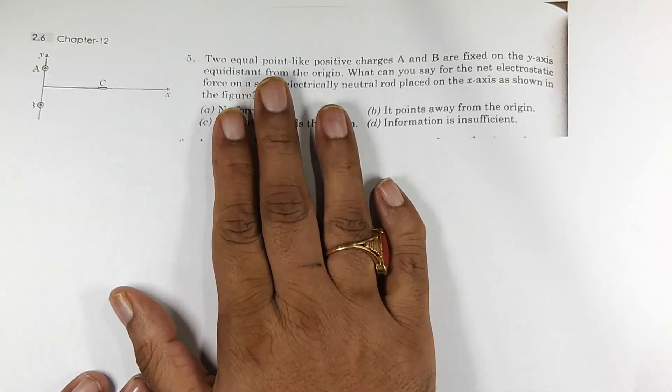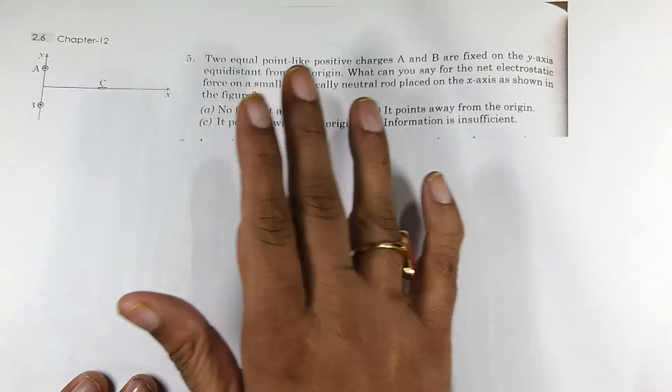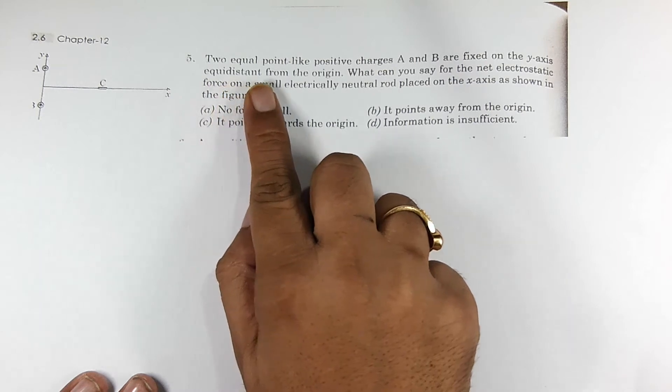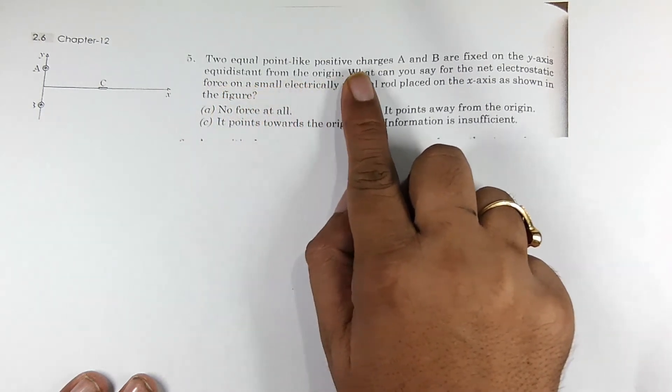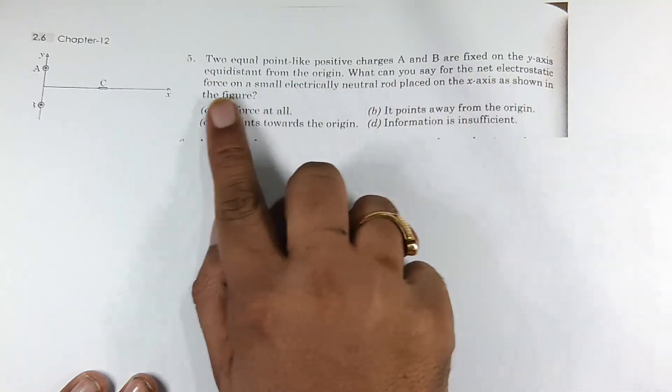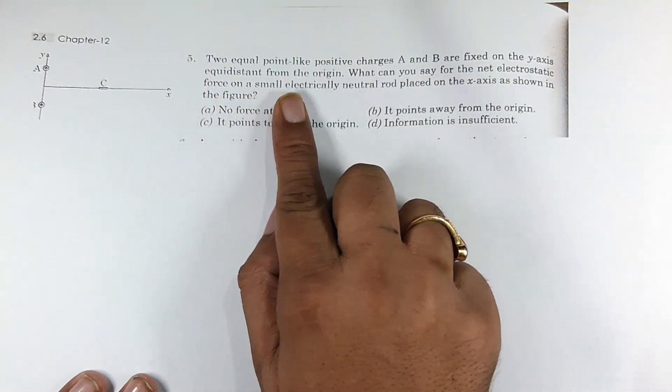It's a pathfinder equation and it's one lander basically. It's very simple objective. Let's see, two equal point-like positive charges A and B are fixed on the y-axis equidistant from the origin.